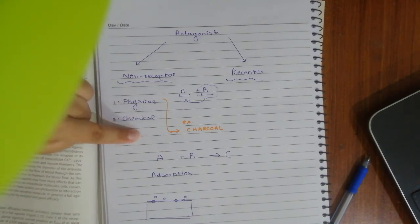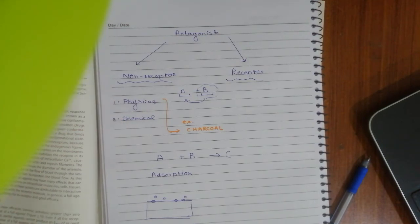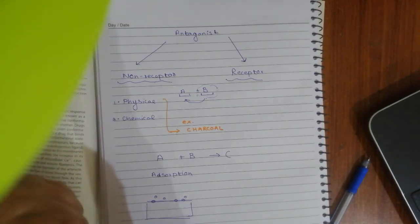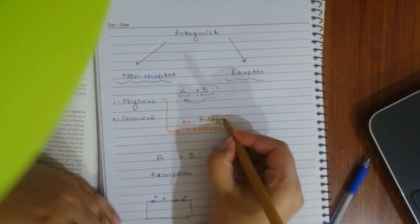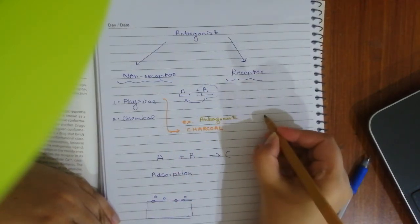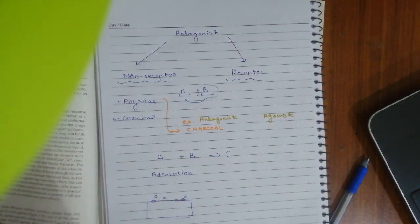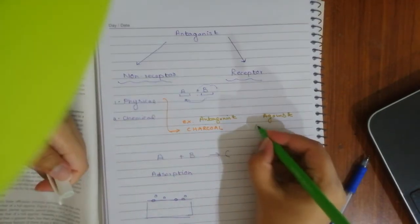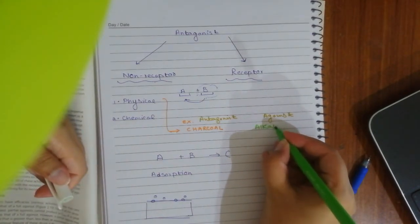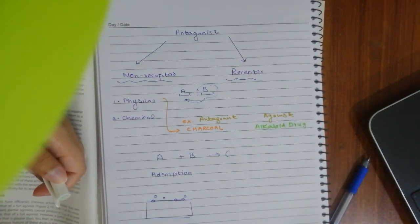So the first important example of physical antagonism is the use of charcoal, because it adsorbs alkaloids and prevents their absorption. In this case, the antagonist is charcoal and the agonist is an alkaloid drug — since most drugs are alkaloids. This is the first example of physical antagonism.